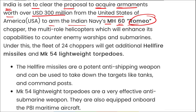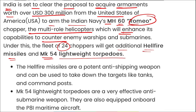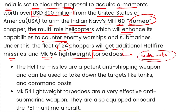As you can see, the arms for this helicopter will be acquired from USA. It is a multi-role helicopter which will enhance capabilities to counter enemy warships and submarines. Under a fleet of 24 choppers, they will get additional Hellfire missiles and MK-54 lightweight torpedoes. Torpedoes are basically missiles that go underwater, or those that can be launched using submarines. So weapons worth 300 million US dollars will be procured by India from USA for the Indian Navy.